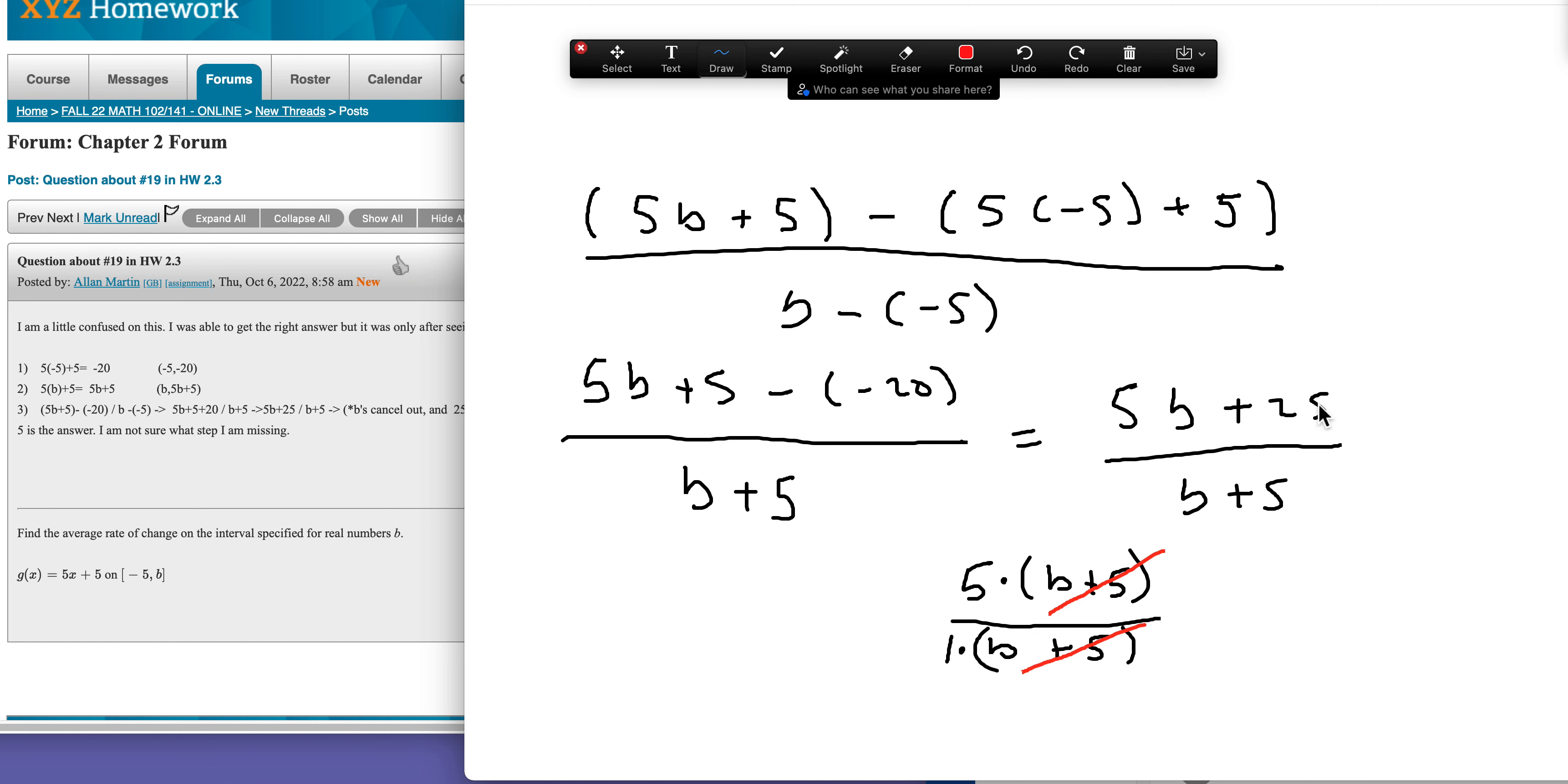But like these b's wouldn't cancel, and those 5's wouldn't. If this 5 wasn't here, I couldn't reduce it all, because I can't write it as a multiplication problem.